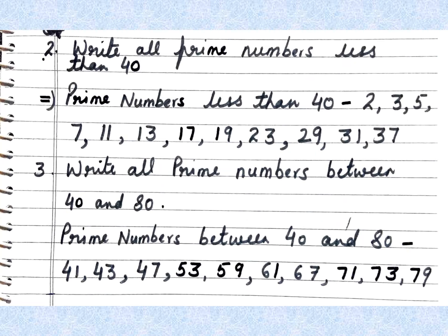Next question: write all prime numbers between 40 and 80. The first prime number after 40 is 41. The prime numbers between 40 and 80 are: 41, 43, 47, 53, 59, 61, 67, 71, 73, and 79.